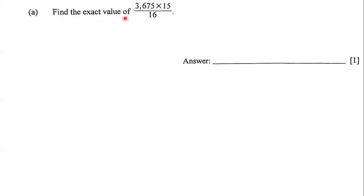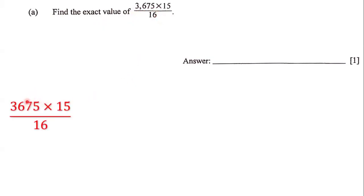Find the exact value of 3,675 multiplied by 15, all over 16. The first thing we're going to do is multiply the two numbers in the numerator. When we multiply them we get 55,125, and that's our answer when we multiply them.